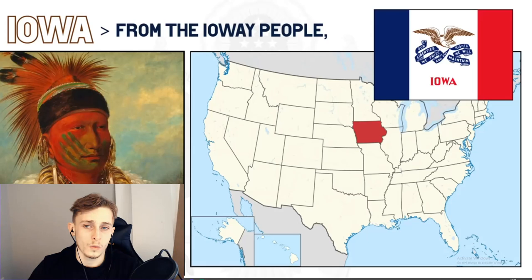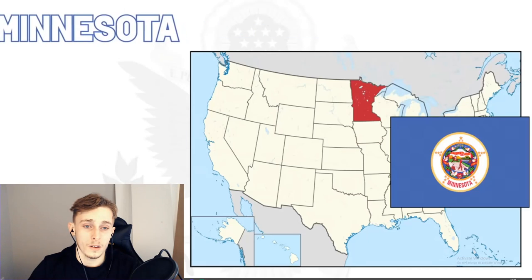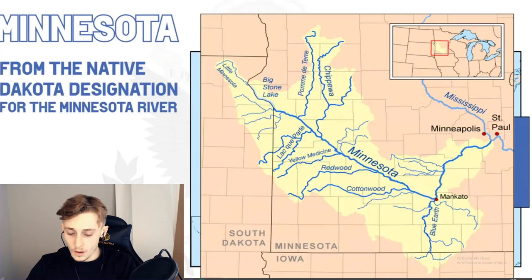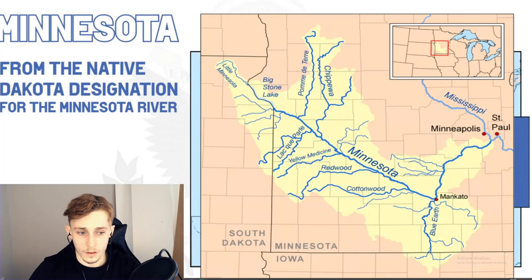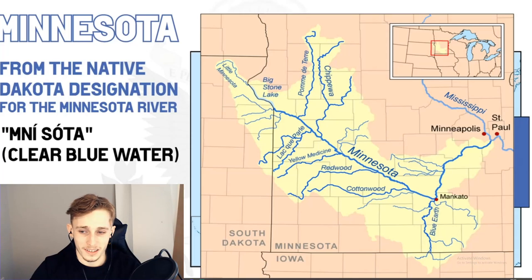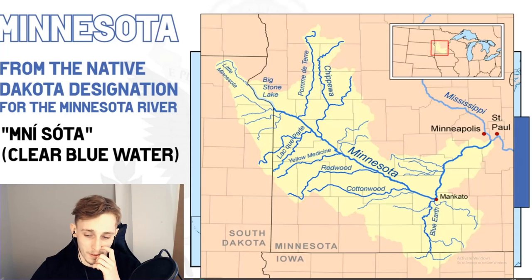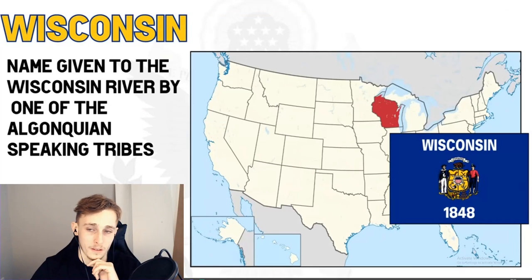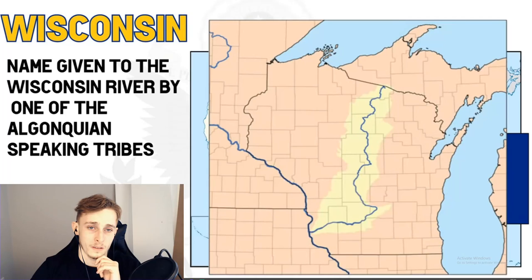Iowa derives its name from the Iowa people, one of many Native American nations whose territory was within the future state at the time of European colonization. Minnesota comes from the native Dakota designation for the Minnesota River — either 'mni sota' meaning 'clear blue water,' or 'ni sota' meaning 'cloudy water.' The Dakota people demonstrated the name to early settlers by dropping milk into water and calling it 'munisota,' suggesting the 'cloudy' meaning is the correct one.